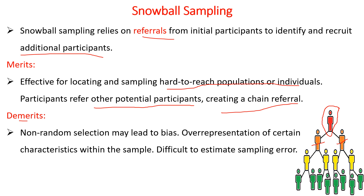Moving to the demerits of snowball sampling: non-random selection may lead to bias and over-representation of certain characteristics within the sample. It is also difficult to estimate the sampling error, because the participants are found in a group or network, so there may be over-representation of some features or characteristics.